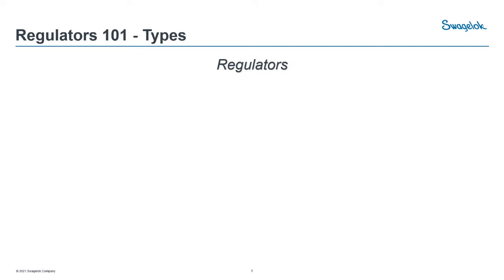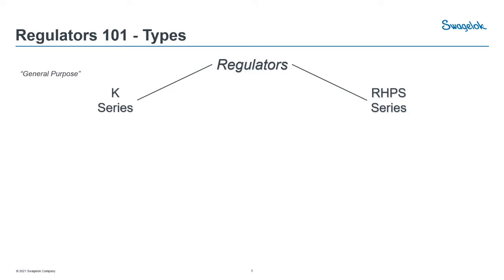In the Swagelok world, we have two series of regulators: the K-series and the RHPS series. The K-series is generally in our general purpose category — you'll see it a lot in analytical or instrumentation applications. The RHPS series is generally used for higher demand or process applications, such as big process lines dealing with higher pressures.